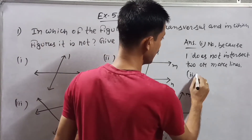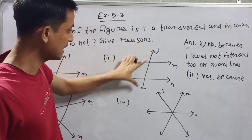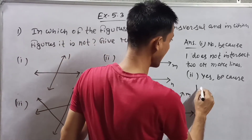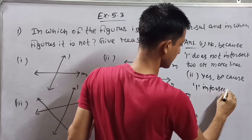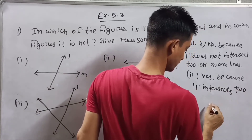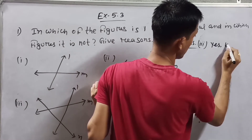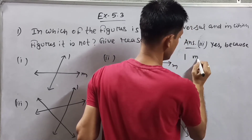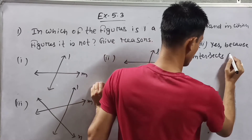Number two: yes, L is a transversal. Because L intersects two lines — two or more lines. So yes, because L intersects two lines.